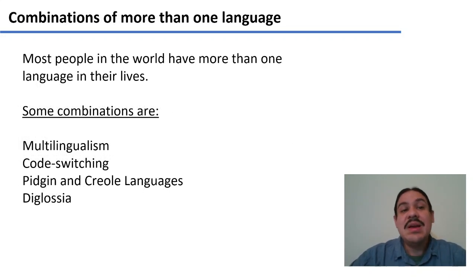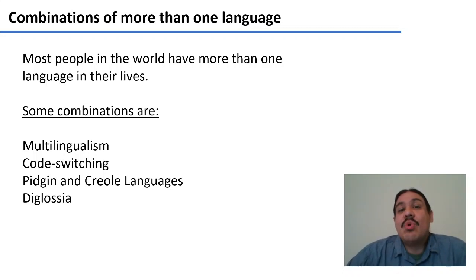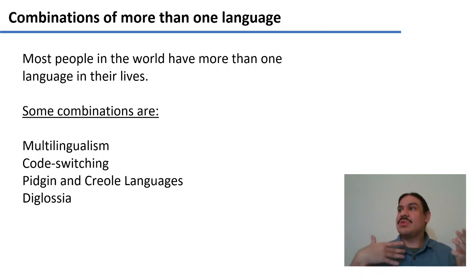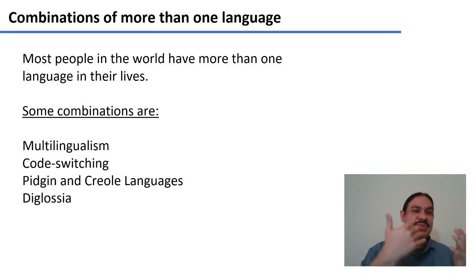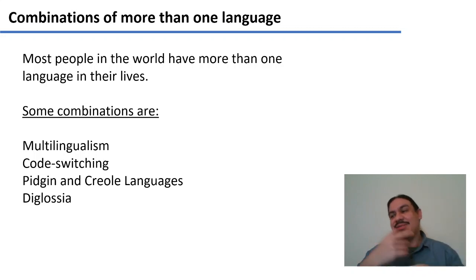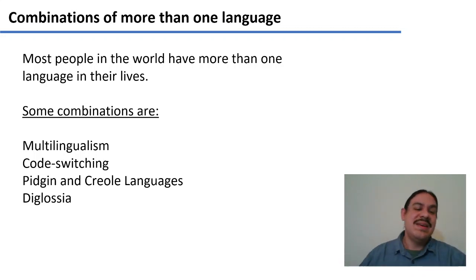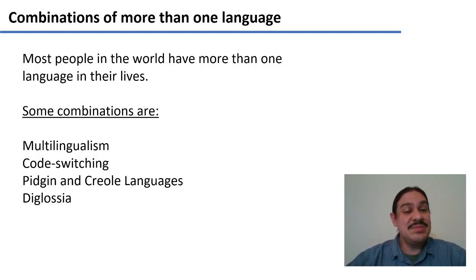Most people in the world have more than one language in their lives. Sometimes one language is used for some people and tasks, and there are other languages when you do something else. There are many combinations in which this can happen. We'll look at multilingualism, code switching, Creole languages, and diglossia.